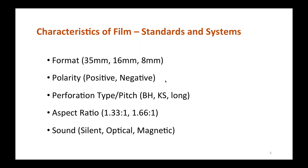Because this webinar is primarily focused on file formats used in the analog-to-digital conversion of motion picture film, let's briefly go over the standards and characteristics typically found in film. Motion picture film contains specifications such as format, aspect ratio, and perforation type and pitch. It contains systems like polarity and sound. It's important to ask ourselves: how do we properly translate these elements meaningfully into digital media?